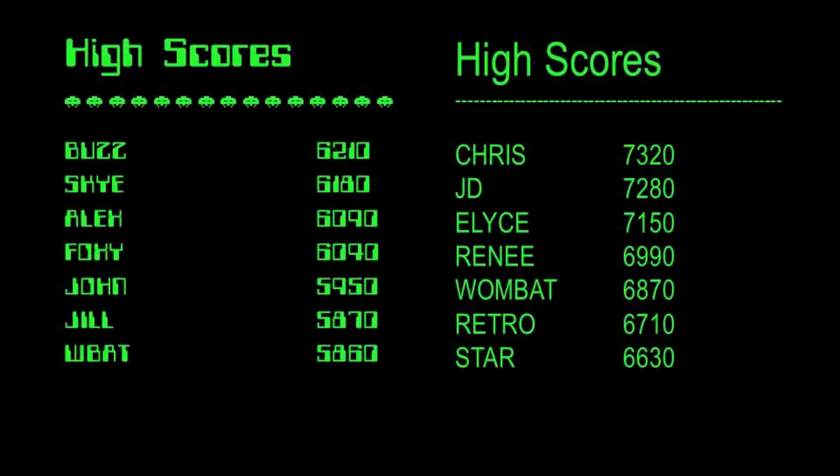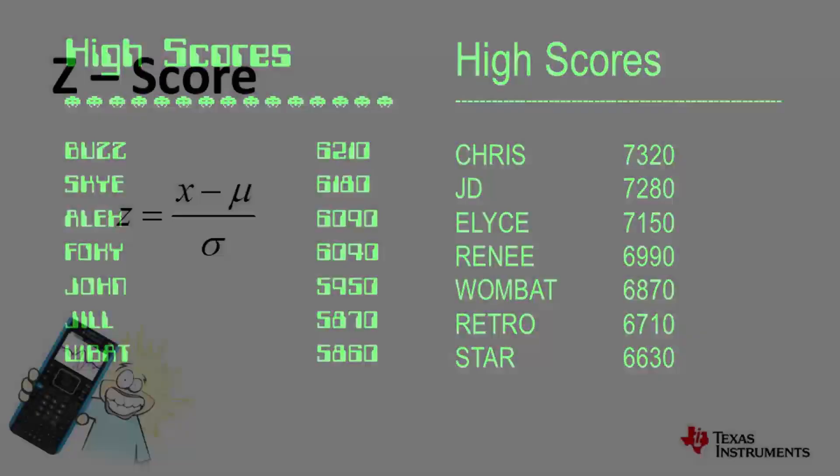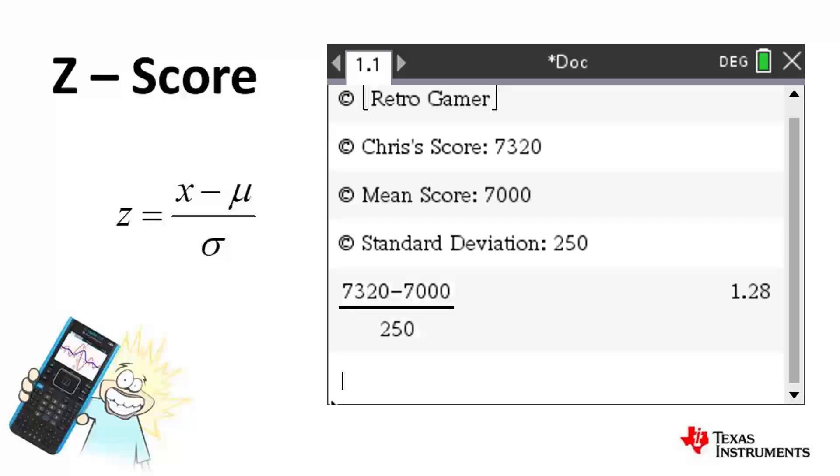So let's see how Buzz's score compares with one of our retro gamers. Chris's high score was 7,320, but our modern day gamers have an average score of 7,000, and a standard deviation of 250. So we see that Chris's standardized score, or Z-score, is 1.28.